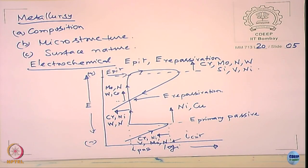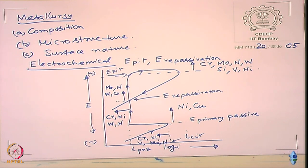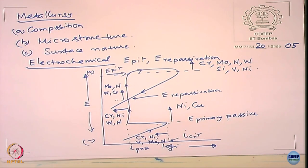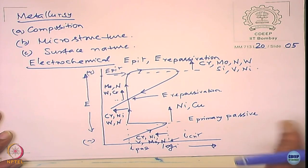Of course, you cannot keep adding alloying elements freely. If you take austenitic stainless steel and want to increase pitting resistance, you cannot keep adding so much chromium — if you add too much, the austenitic phase will turn into ferritic phase. So you need to maintain phase balance by adding nickel. The alloy development is a different story, but corrosion resistance depends on this diagram; you compensate with relevant alloying elements to achieve different phases.